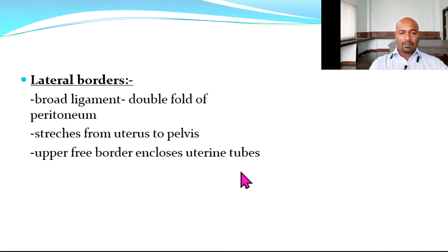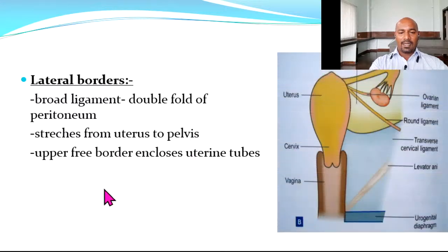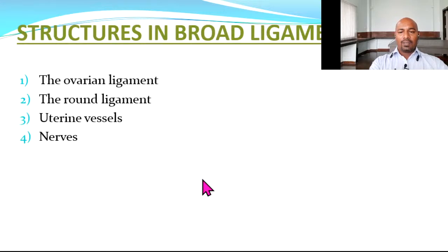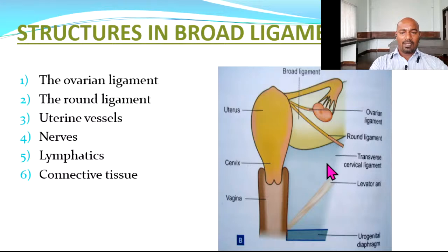Coming to the borders — laterally there is the broad ligament, which is attached along the lateral border of the uterus. It is a double fold of peritoneum stretching from the uterus to the pelvis; its upper free border encloses the uterine tubes. Structures within the broad ligament include the ovarian ligament (going from the uterus to the ovaries), the round ligament of the uterus, pelvic planchnic nerves, lymphatics, and connective tissue.